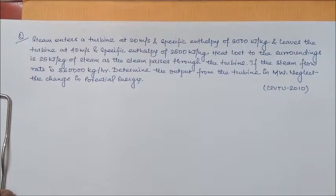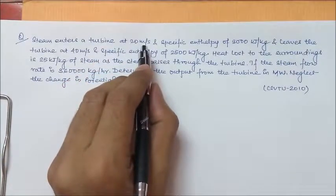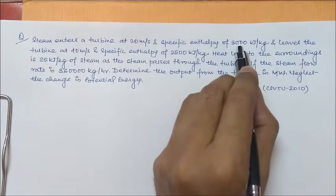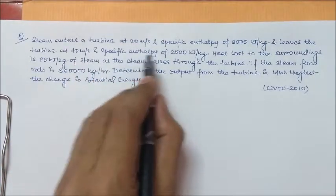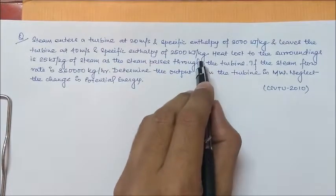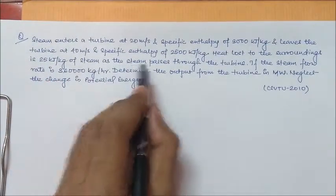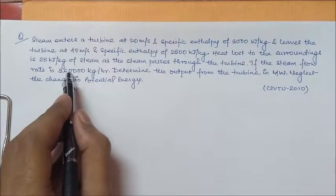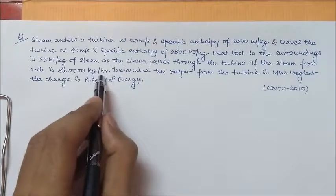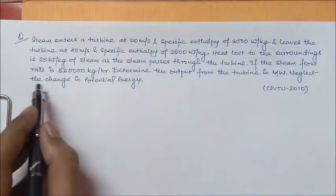In this video, we are discussing a question that has been asked in CSUTU University exam in 2010. The question is: Steam enters a turbine at 20 meters per second and specific enthalpy of 3000 kilojoule per kg, and leaves the turbine at 40 meters per second and a specific enthalpy of 2500 kilojoule per kg. Heat lost to the surrounding is 25 kilojoule per kg of steam as the steam passes through the turbine. If the steam flow rate is 3,60,000 kg per hour, determine the output from the turbine in megawatt. Neglect the change in potential energy.